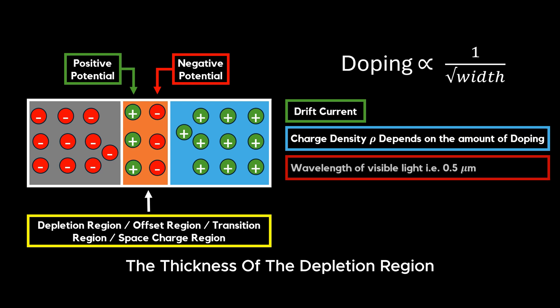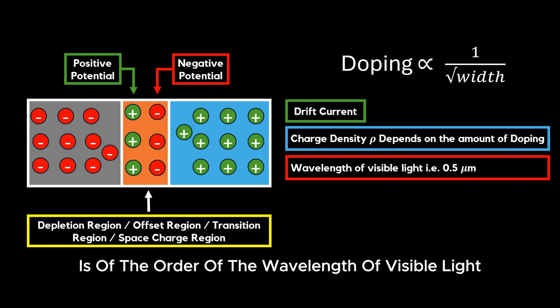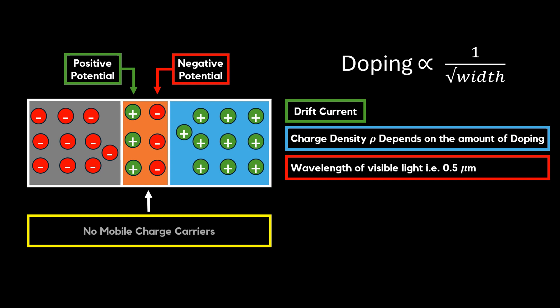The thickness of the depletion region is of the order of the wavelength of visible light, that is 0.5 micrometers. In the depletion region, there are no mobile charge carriers.